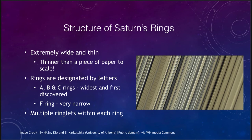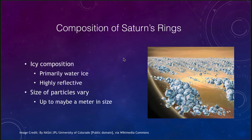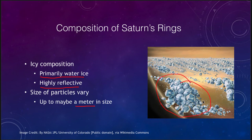Saturn's rings are primarily water ice, which makes them highly reflective — that's why we see them prominently from Earth, because they're reflecting a lot of light. The size of the particles varies, maybe up to about a meter in size, and some of them will clump together. This is an artist's conception of what the rings might look like if you were sitting inside the rings of Saturn — you'd have clumps of material that would stick together, though they're not strong enough to hold themselves together gravitationally. As objects collide, they would stick together and other times be pushed apart.